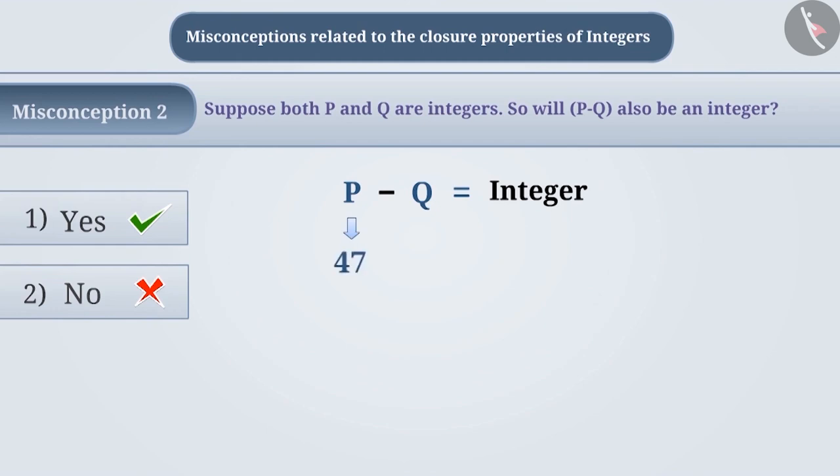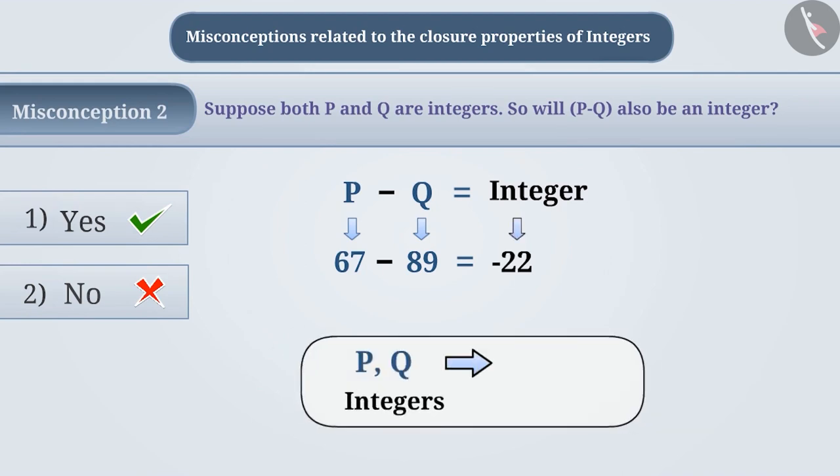For example, if the value of P is 47 and the value of Q is 35, then the value of P minus Q will be 12, which is an integer. Similarly, if the value of P minus Q would be minus 22, this is also an integer. So, when P and Q are integers, P minus Q will also be an integer.